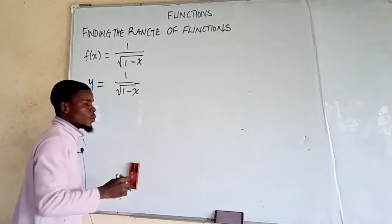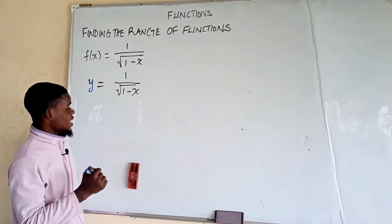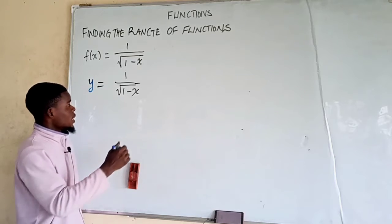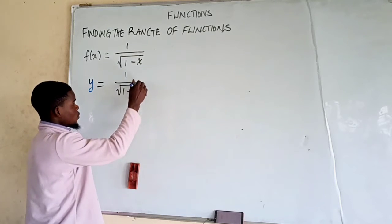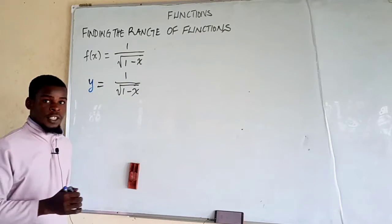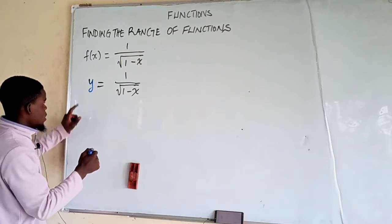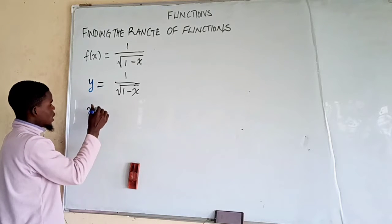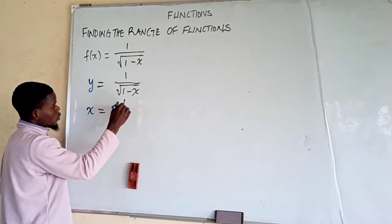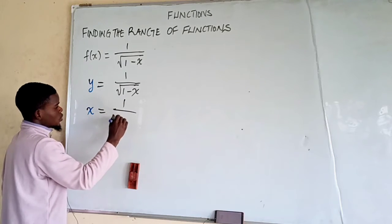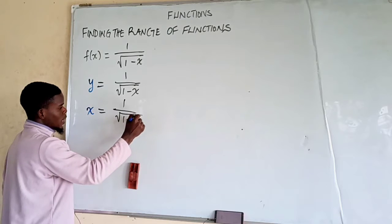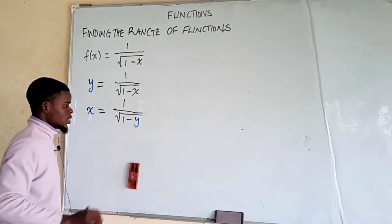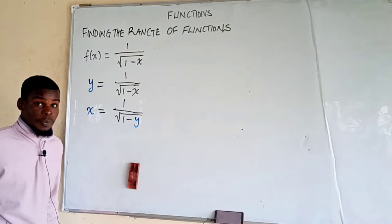Now what we're going to do is interchange x and y, and then make y the subject of the formula after interchanging. So we interchange x and y — in place of y we put x — giving us x equals 1 over the square root of 1 minus y.